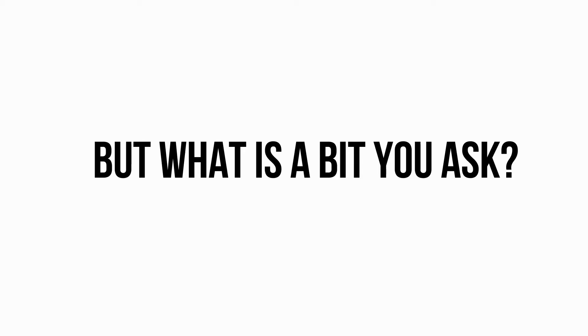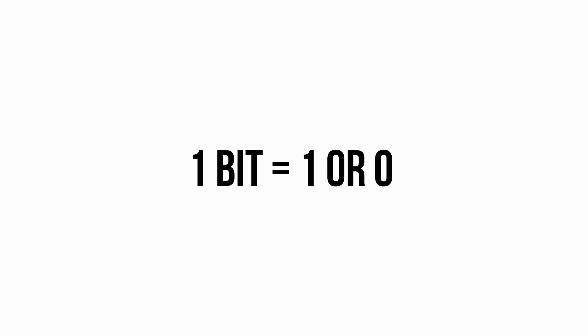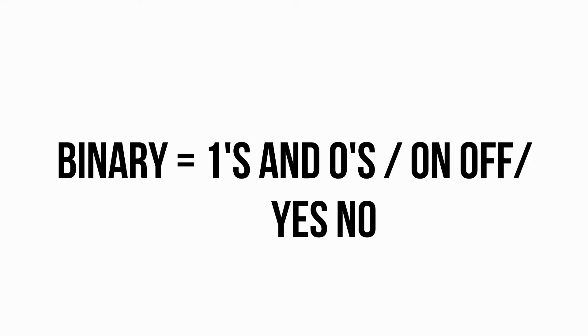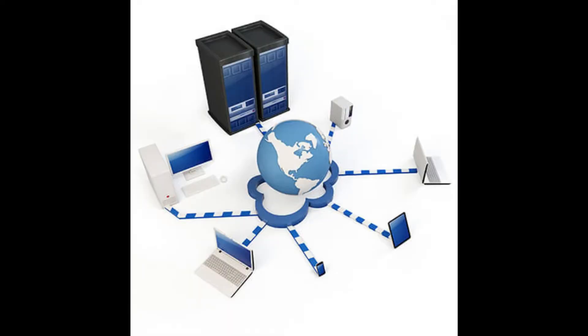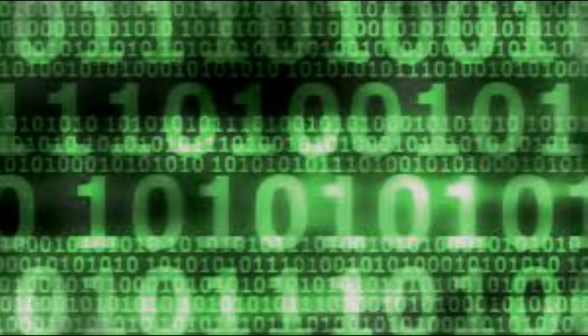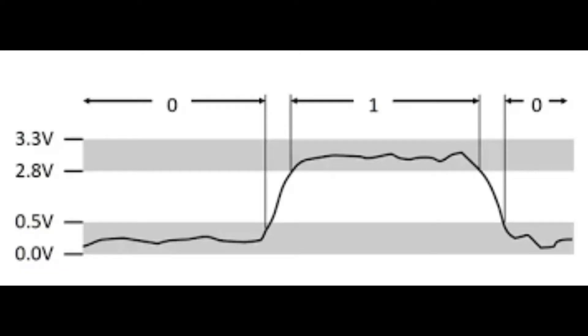It might be easiest for us to understand what 32 and 64-bit even means. A bit is essentially a binary digit, binary being either 1s or 0s that are used to communicate with the computer in a digital form. A computer will generate bits that are high or low electric voltages through its circuits.